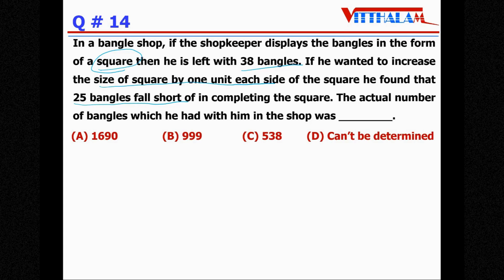The actual number of bangles which he had with him in the shop was blank. So initially with available bangles, he is making the square. Let's say the side of the square is x. So first equation will be x² plus 38 equals to number of bangles. Then if he increases the size of square by one, so (x+1)², then there's a shortfall of 25, equals to number of bangles.